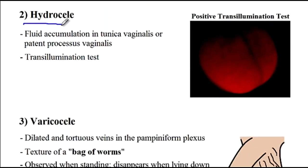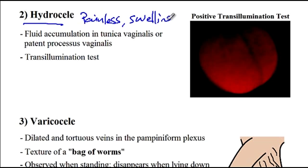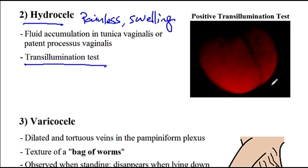The next condition is hydrocele, where there is fluid accumulation in the tunica vaginalis or a patent processus vaginalis. These patients generally present with painless scrotal swelling. One important finding on examination is a positive transillumination test — if you shine light on the testicles, the light travels through because there is only fluid inside the scrotum. If there was a testicular mass, the light would be blocked and there would be no transillumination.